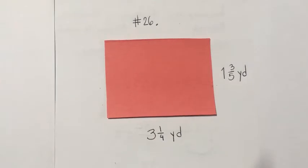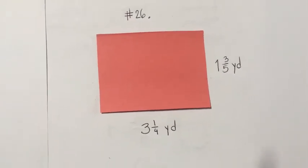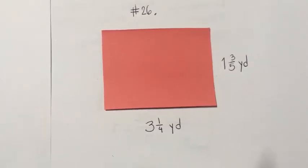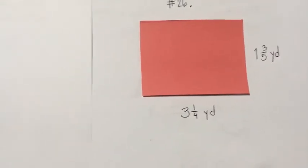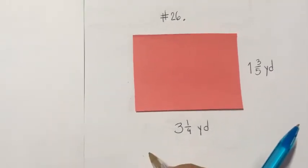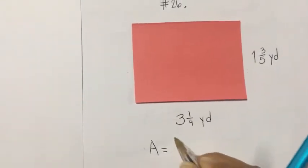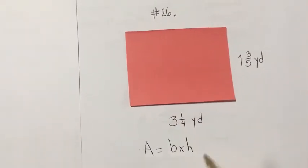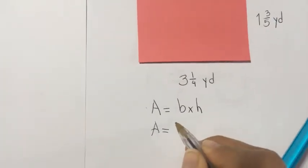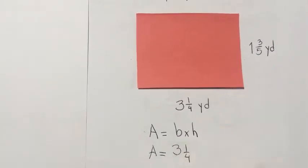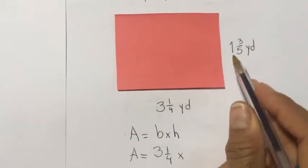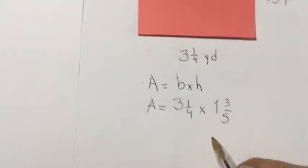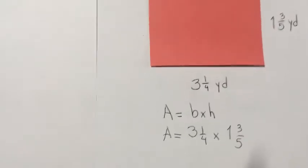Here's another example on page 194 — problem solving, exercise number 26: find the area of the rectangle. Remember, the formula for the area of a rectangle is base times height. The base is 3 and 1/4 yards, and the height is 1 and 3/5. We need to rename both as fractions — that's the first step.